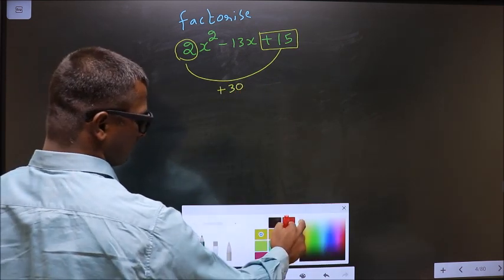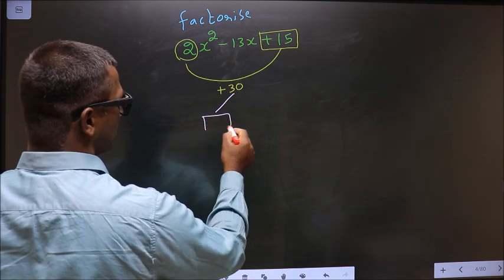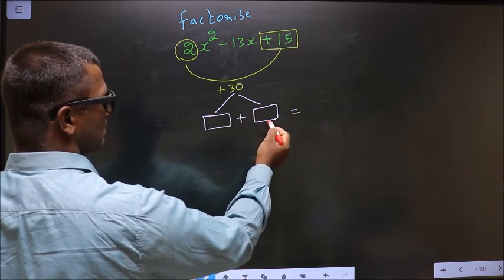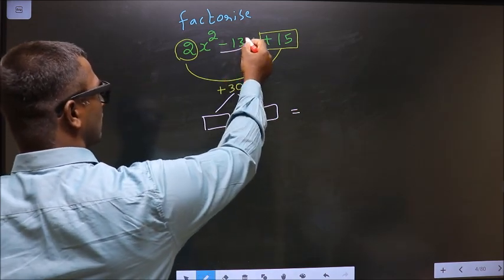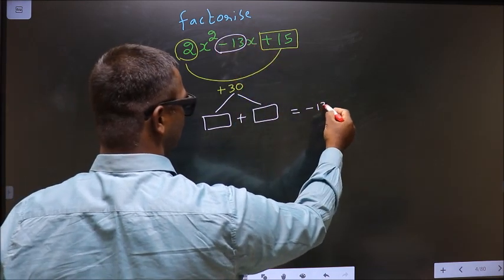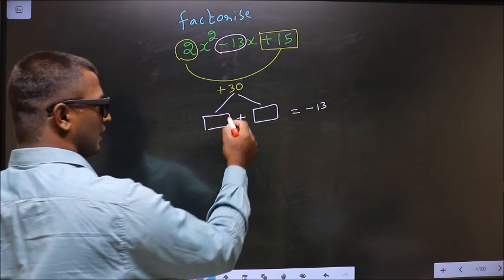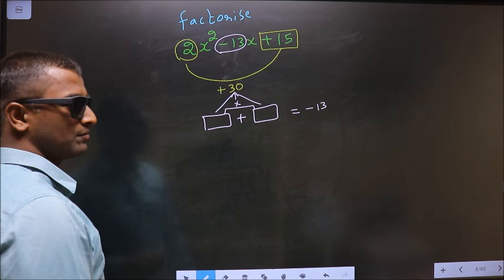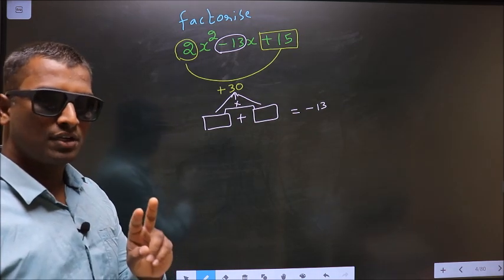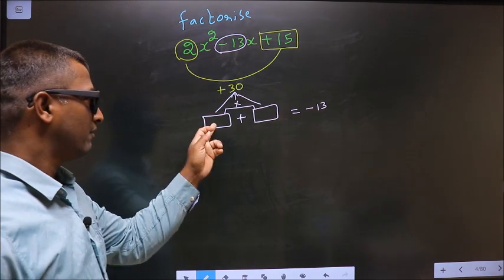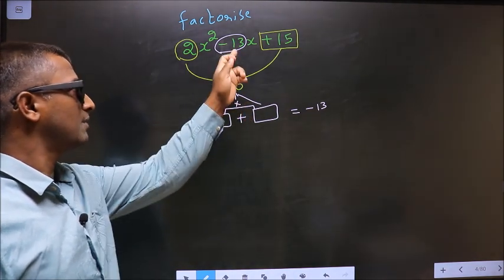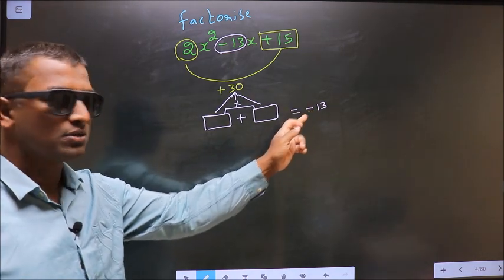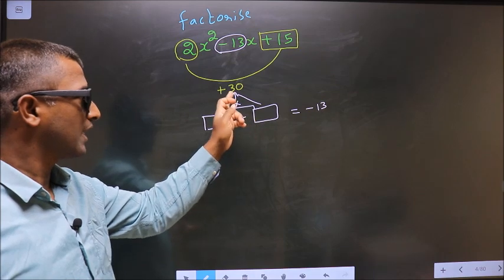Now you should look for two numbers such that when you add these two numbers, you should get the middle coefficient, that is -13, and when you multiply these two, you should get +30.